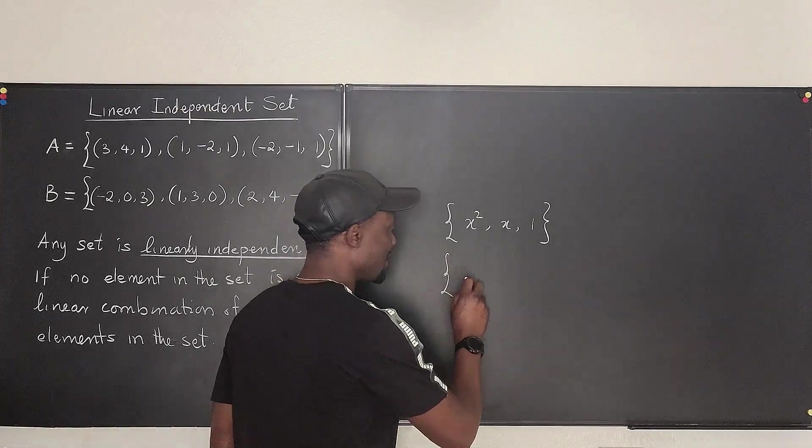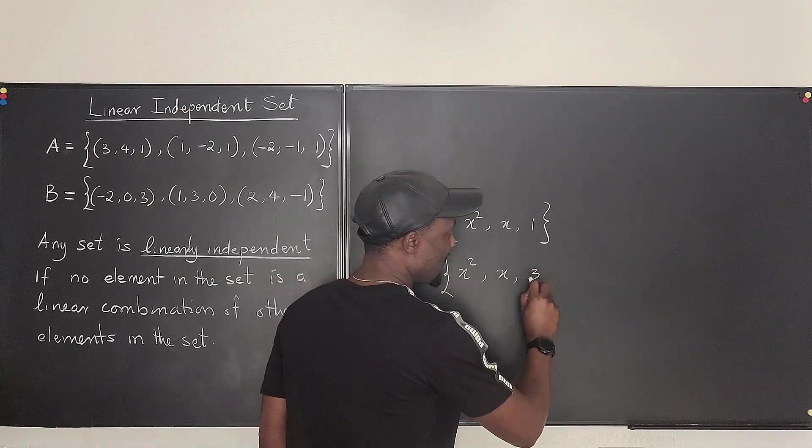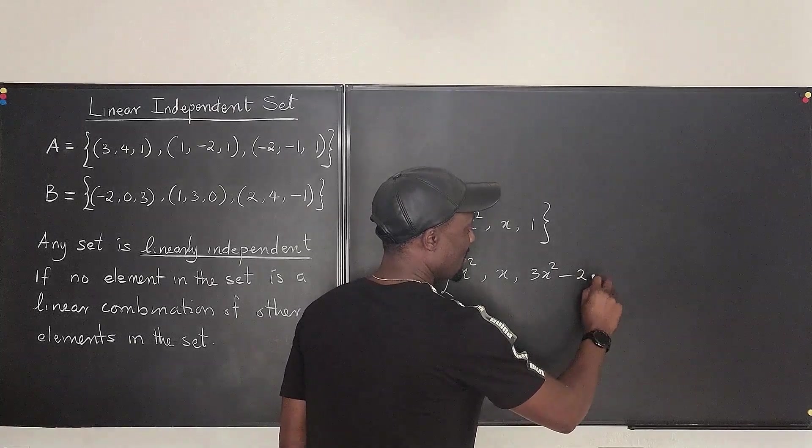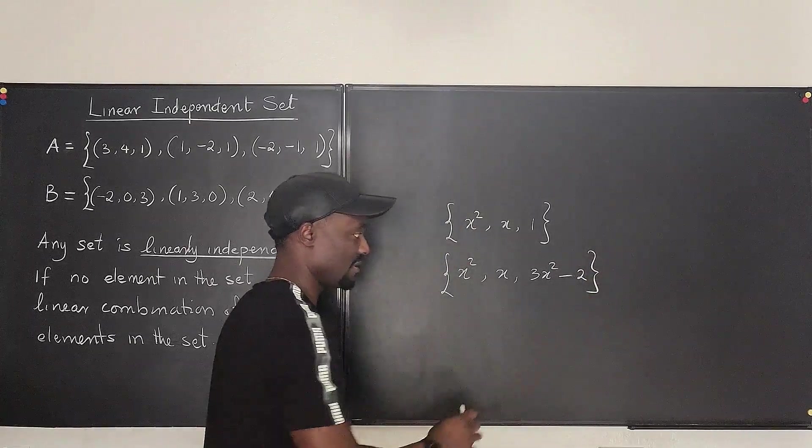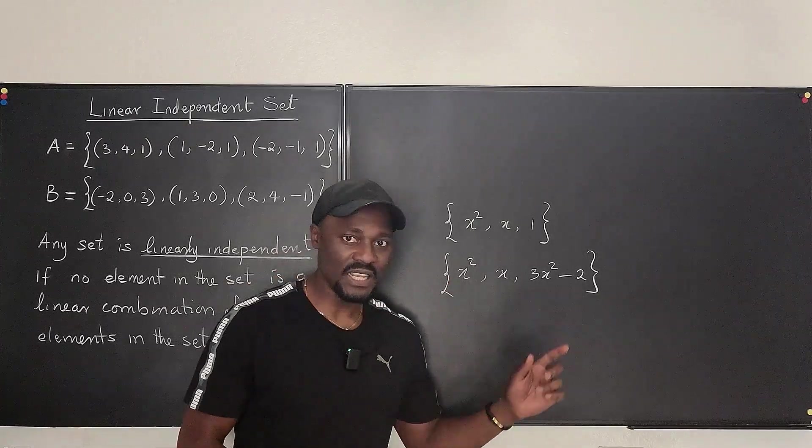So if I give you a set like this that has x squared, has x, has 3x squared, has minus 2. If I give you this, is this set linearly independent?